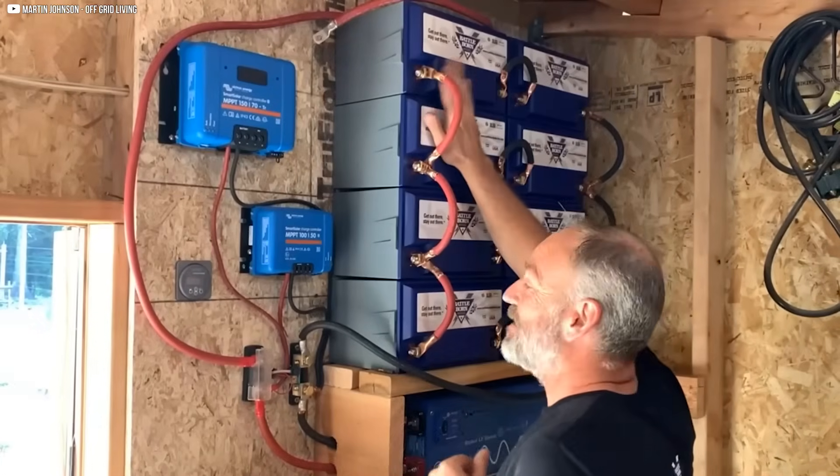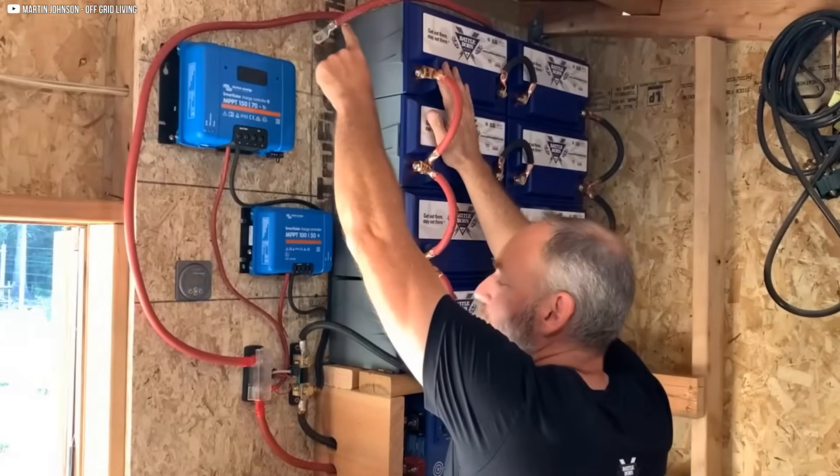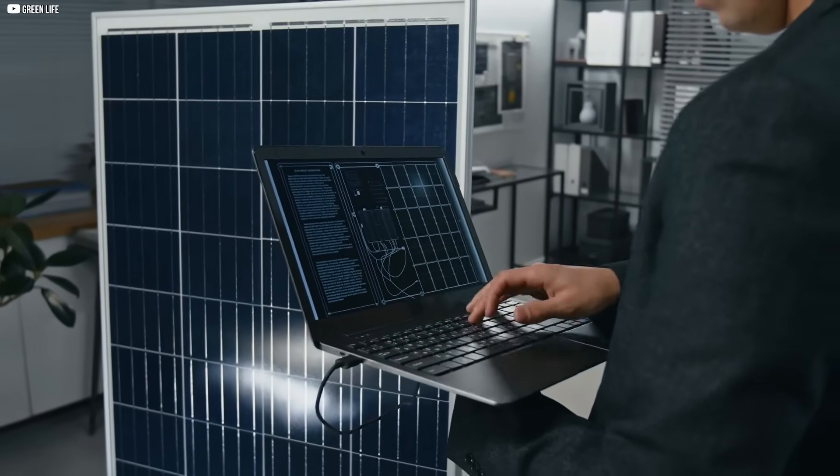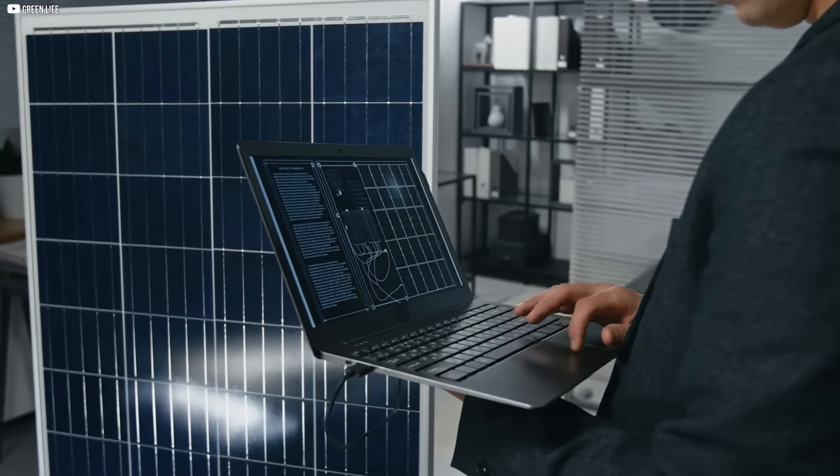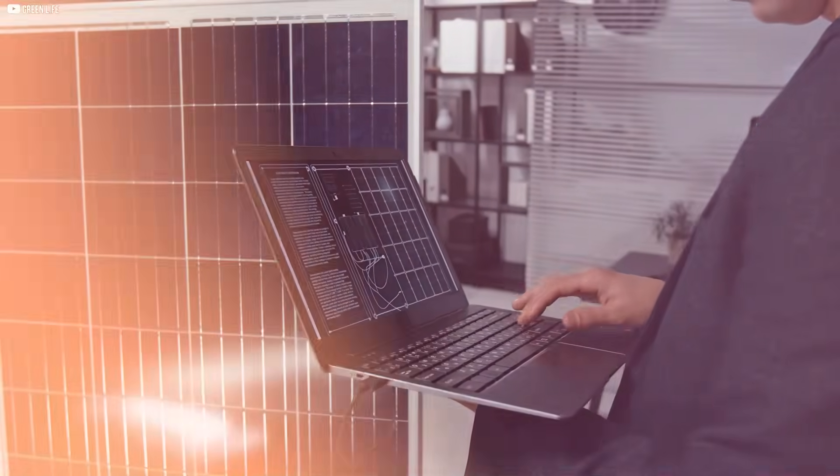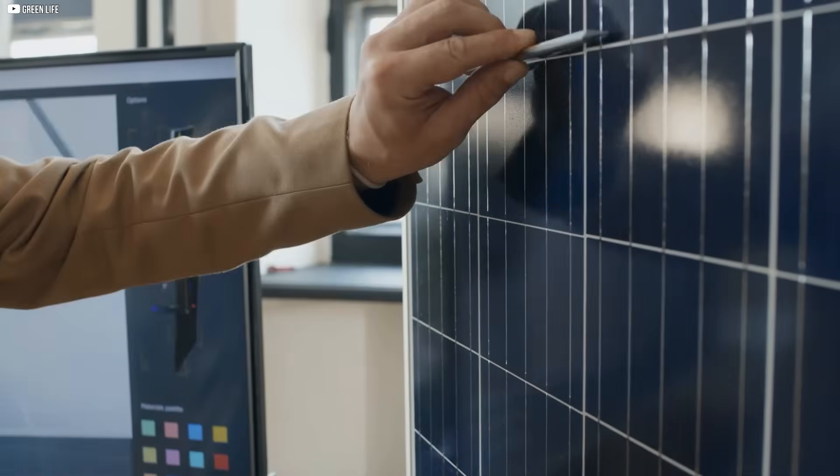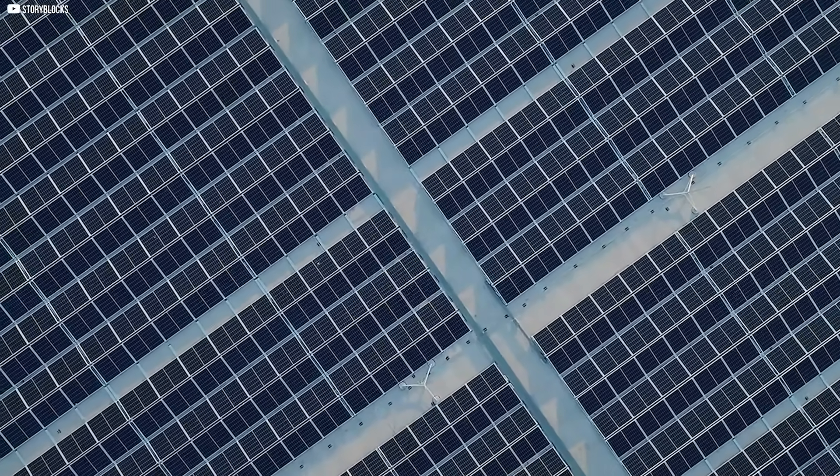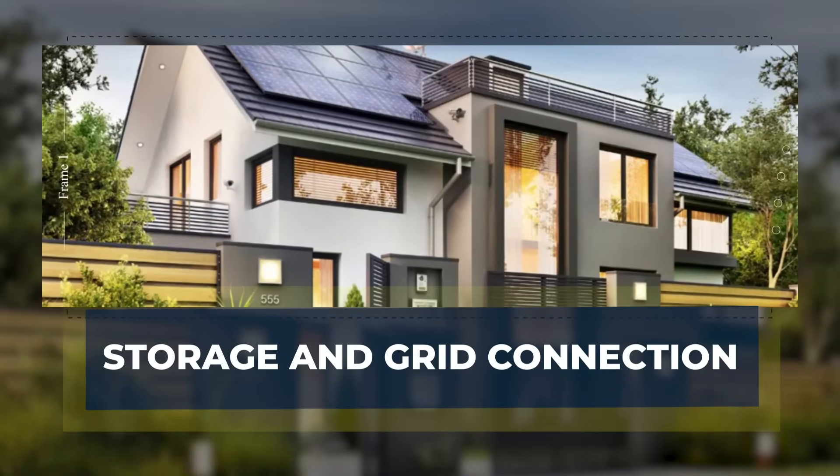Balancing series and parallel connections depends on what the system needs. Higher voltage setups reduce energy loss over long distances, but too much voltage can damage equipment like inverters or batteries. Too much current, on the other hand, may require thicker cables and more robust connectors. That's why engineers carefully calculate how many panels go in each string, how many strings go in parallel, and how everything ties back to the rest of the system.